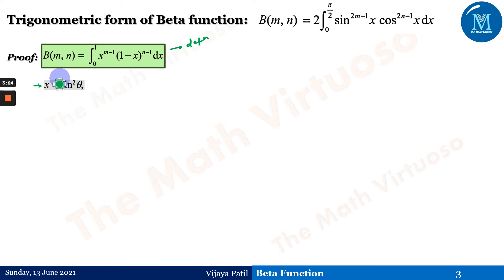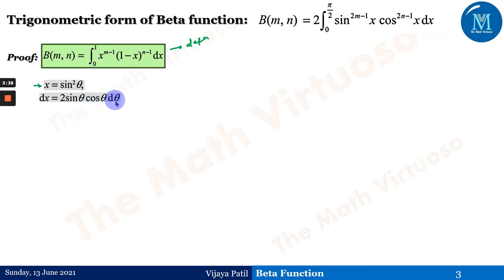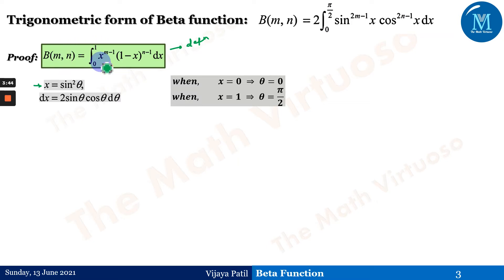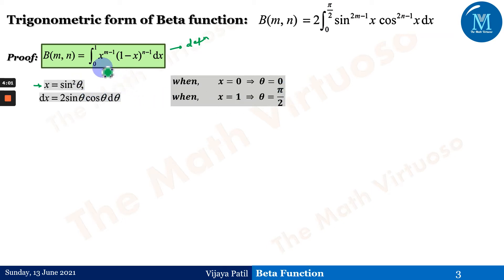For this trigonometric form, we take the substitution x = sin²(θ). This gives dx = 2 sin(θ) cos(θ) dθ. With the limits: when x = 0, θ = 0, and when x = 1, θ = π/2. So the limits change from 0 to 1 in the definition to 0 to π/2 by this substitution.